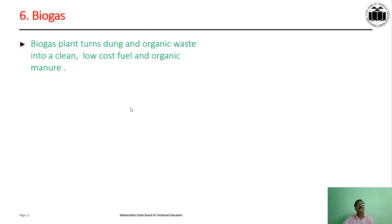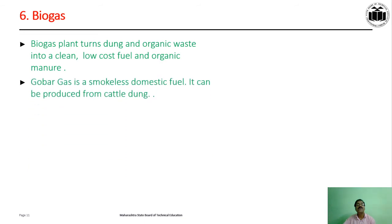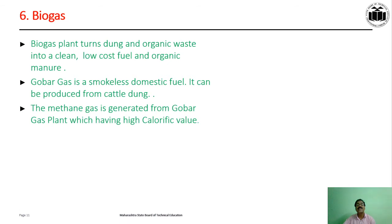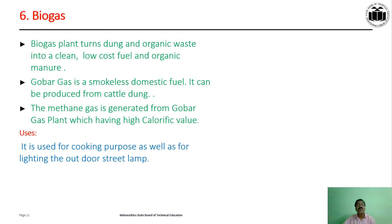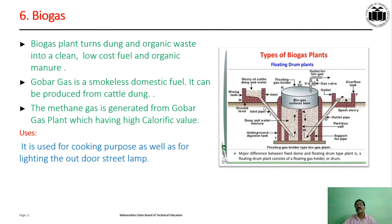Biogas: a biogas plant turns dung and organic waste into a clean, low-cost fuel and organic manure. Biogas is a smokeless domestic fuel and can be produced from cattle dung. The methane gas generated from the gobar gas plant has a high calorific value. Uses of gobar gas: it is used for cooking as well as for lighting outdoor street lamps in villages. This figure shows how the biogas plant works on the basis of anaerobic digestion.